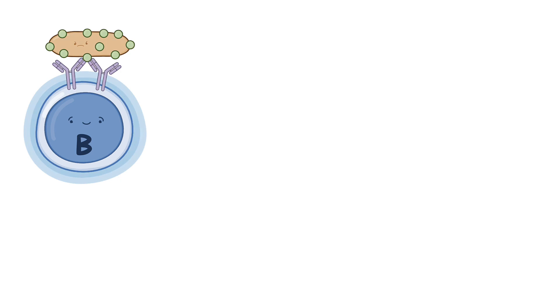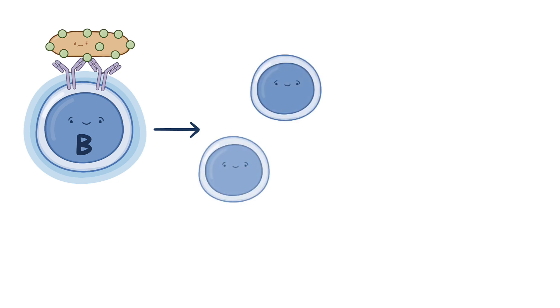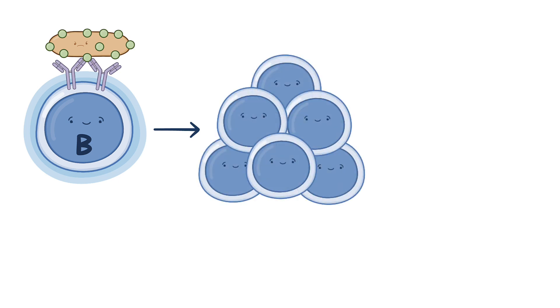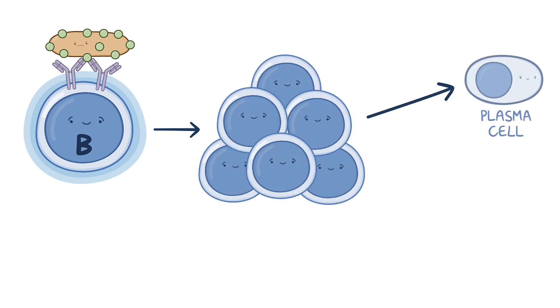Let's start with the activation of B cells, which occurs when a foreign antigen binds and cross-links adjacent BCRs, thereby triggering a cascade of events that help B cells proliferate and differentiate.